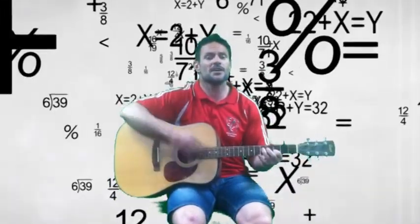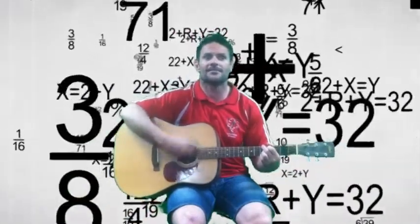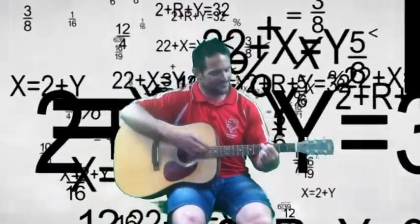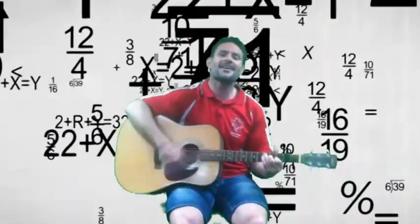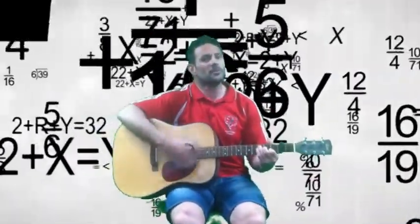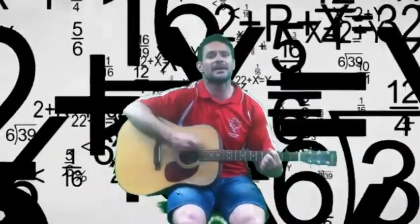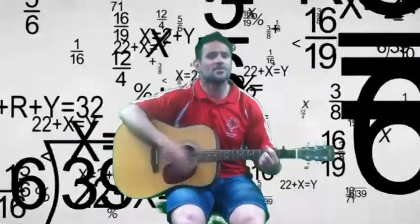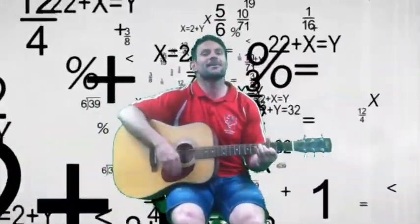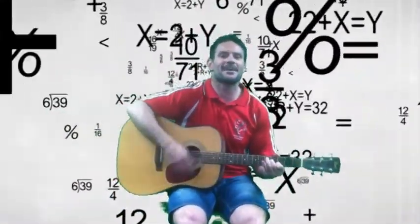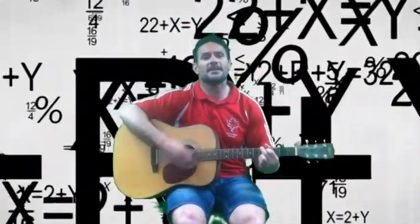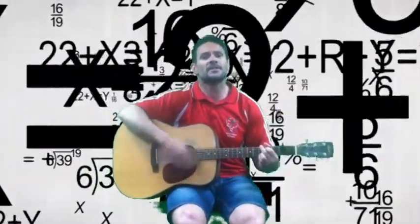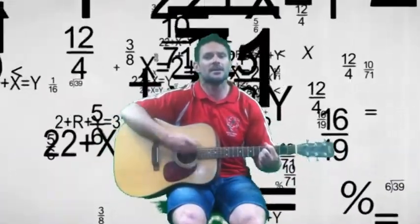They tell us where the x-intercepts are. Negative b plus or minus square root of b squared minus 4ac, all over 2a — that's the way.